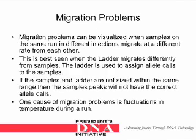Migration problems can be visualized when samples on the same run in different injections migrate at a different rate from each other. This is best seen when the ladder migrates differently from the samples. The ladder is used to assign allele calls to the samples. If the samples on the ladder are not sized within the same range, then the sample peaks will not have the correct allele calls. One cause of migration problems is fluctuations in temperature during a run.